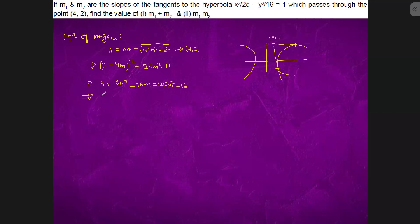It will come out to be further nine m square plus sixteen m minus twenty equals to zero.